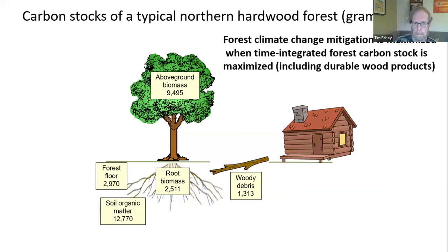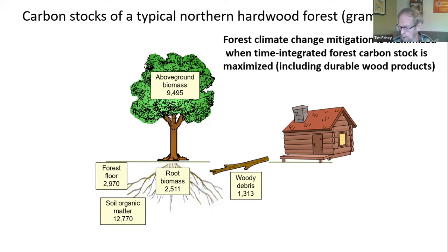This brings me to a key principle shown in bold here. Any carbon that's not in the forest is in the atmosphere, trapping heat. All the time that carbon dioxide molecule is up there in the atmosphere, it's trapping heat. So the goal, from a forest management standpoint, is to maximize the total stock of carbon through time — to keep as much carbon as possible in the trees and in the forest. But we would include in this stock the harvested products that go into durable products like buildings.